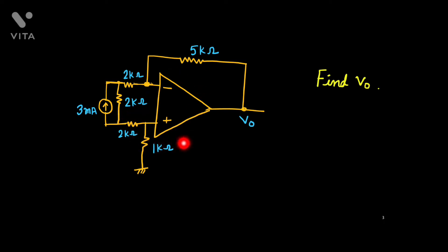And in this circuit, the source is neither connected to the inverting terminal or the non-inverting terminal because it is connected in between. Now we will try to solve this problem to find out this output voltage V0.